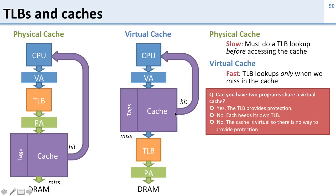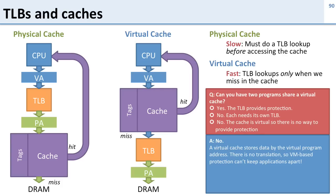Here's a question: can two programs share a virtual cache? Well, not really — and this is the problem with virtual caches. The virtual cache stores data by virtual address with no translation, so we can't run two programs and keep their data separate. If program one accesses virtual address 1000 and program two also accesses virtual address 1000, they'll both find the same entry in the cache. There's no way to keep the applications apart.